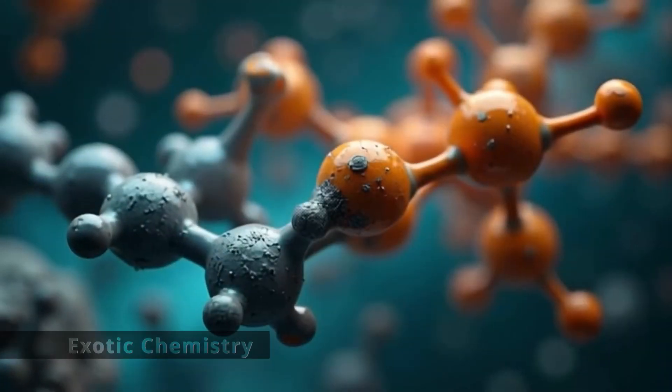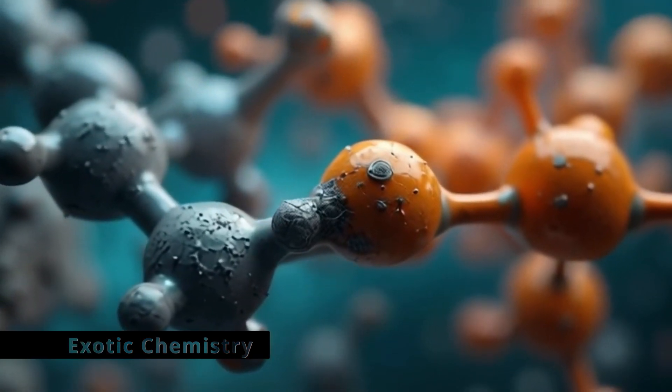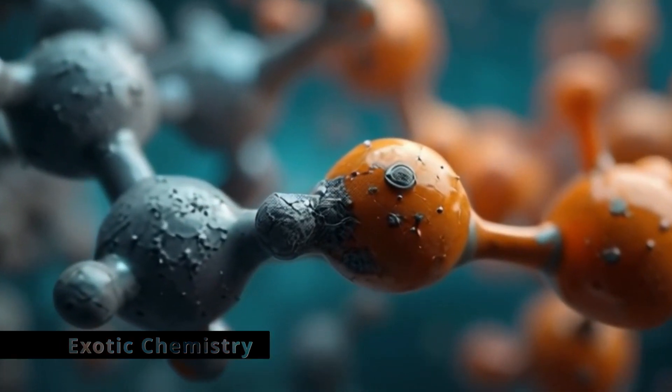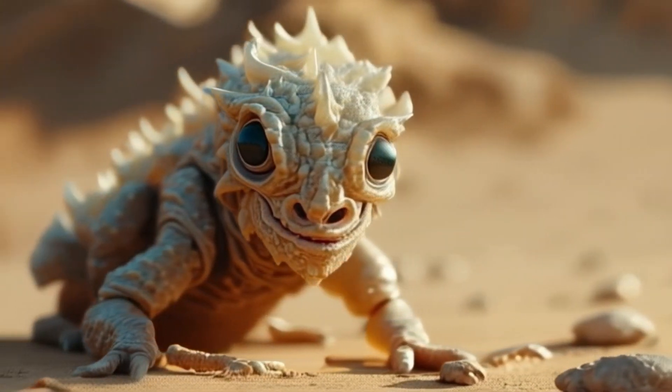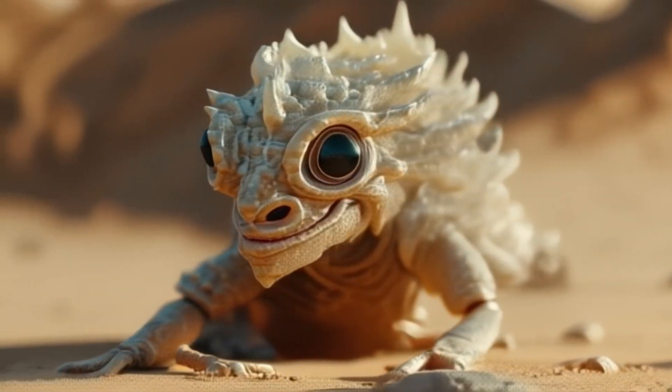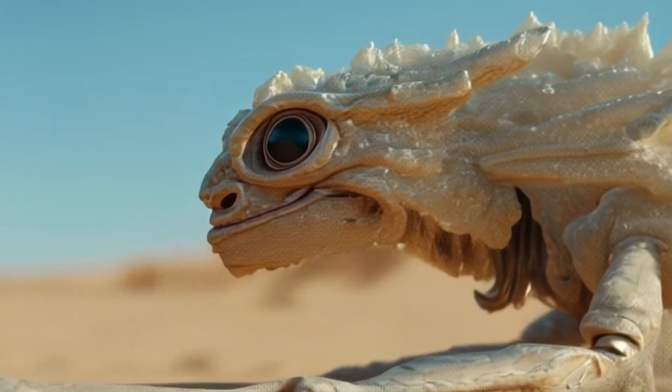On Earth, life is built on carbon, but what if life in other parts of the universe is based on completely different chemistry? Silicon, an element similar to carbon, could form the backbone of alien life in environments too hot for carbon-based life to survive.